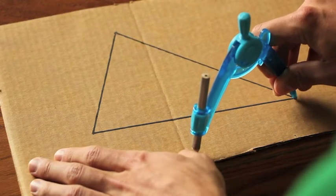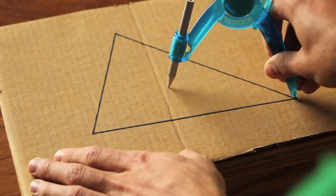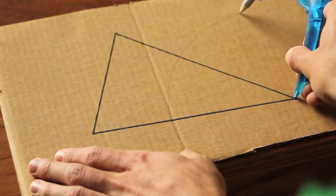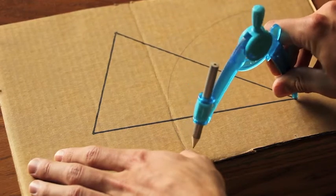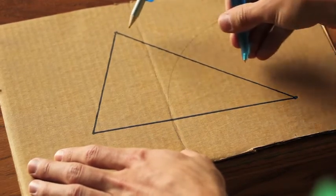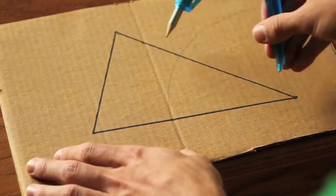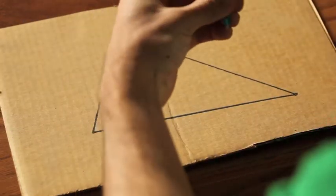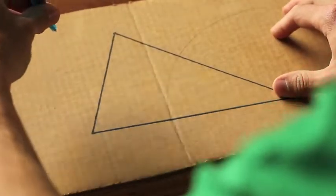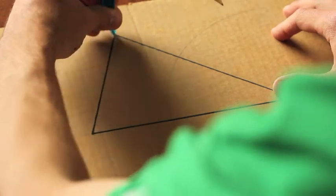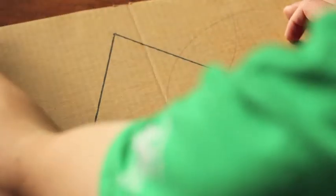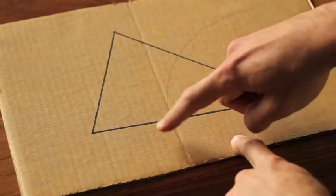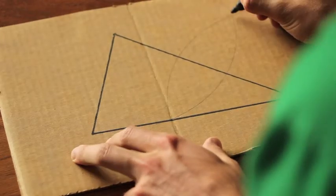To construct the median, we use our compass, and we swing an arc from both endpoints of the side. We'll set our compass at a radius that is at least greater than half the distance between those two points of the side. We'll do the same for this other point.